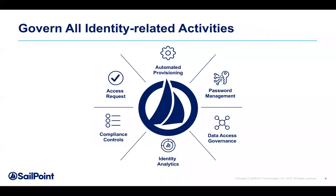These are some common activities around every identity that we manage and govern: automated provisioning — joiner, mover, leaver — requesting additional access, password management, data access governance, identity analytics, using machine learning to suggest things along the way, and of course compliance controls. We're going to focus most on automated provisioning and compliance controls today with RPAs and bots.